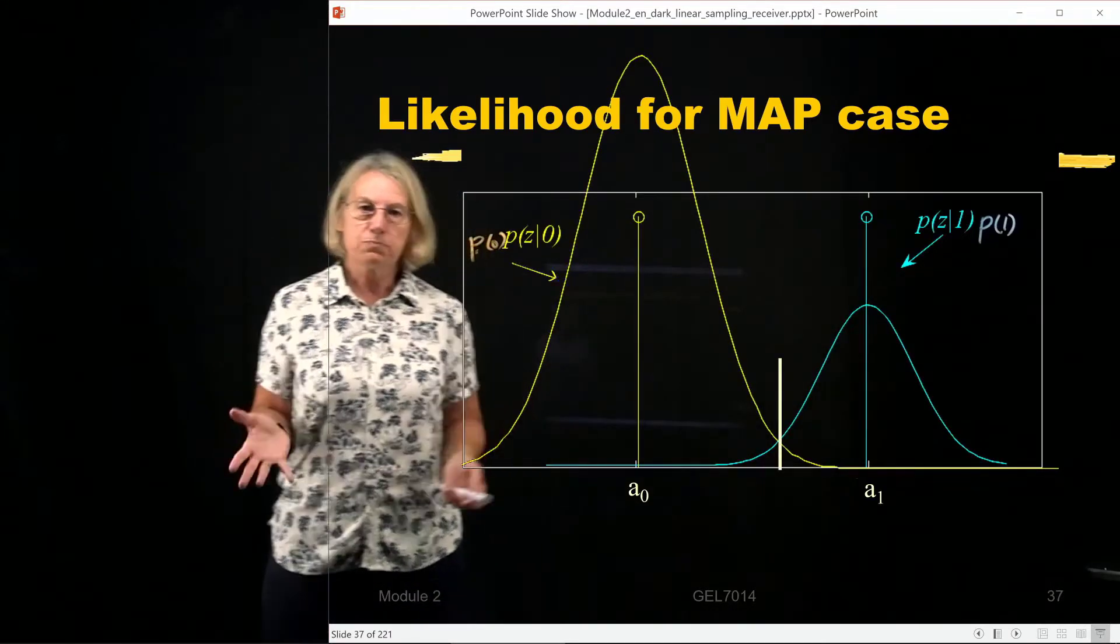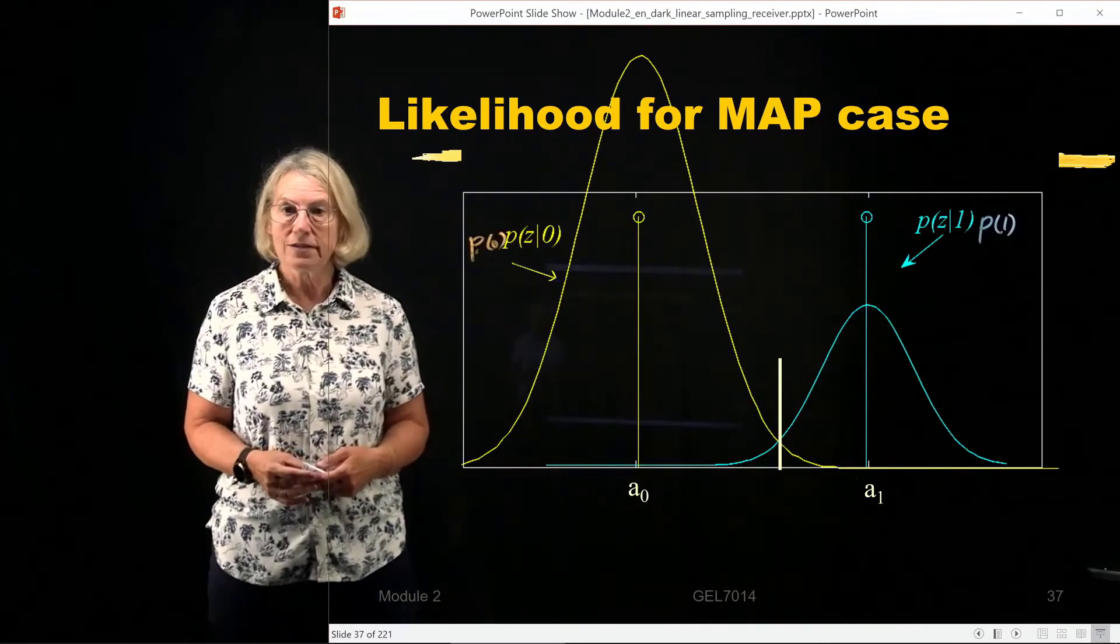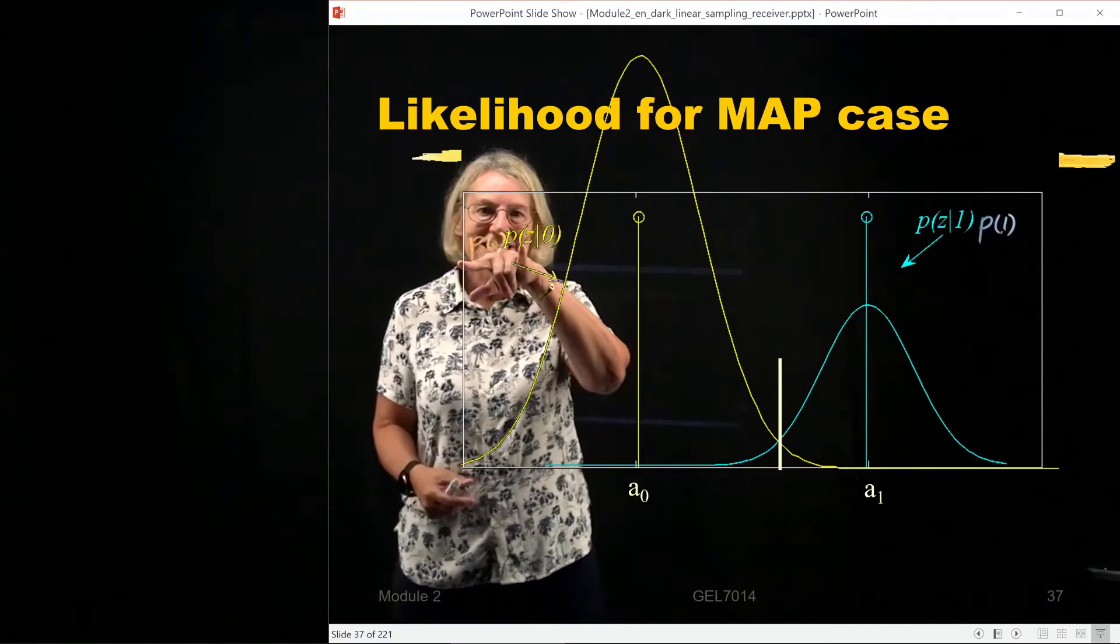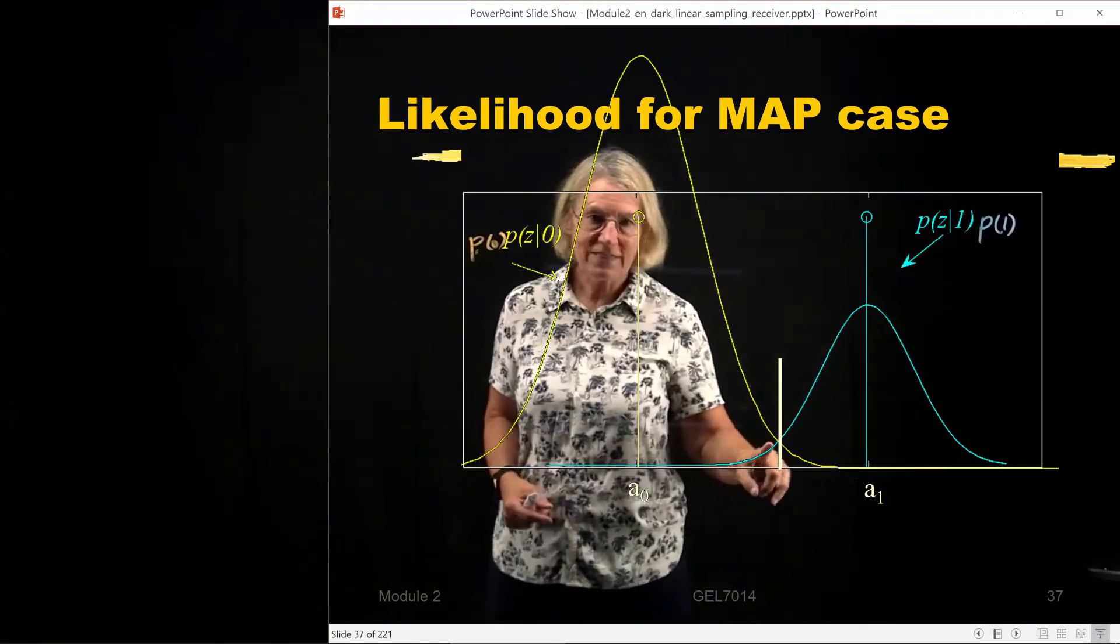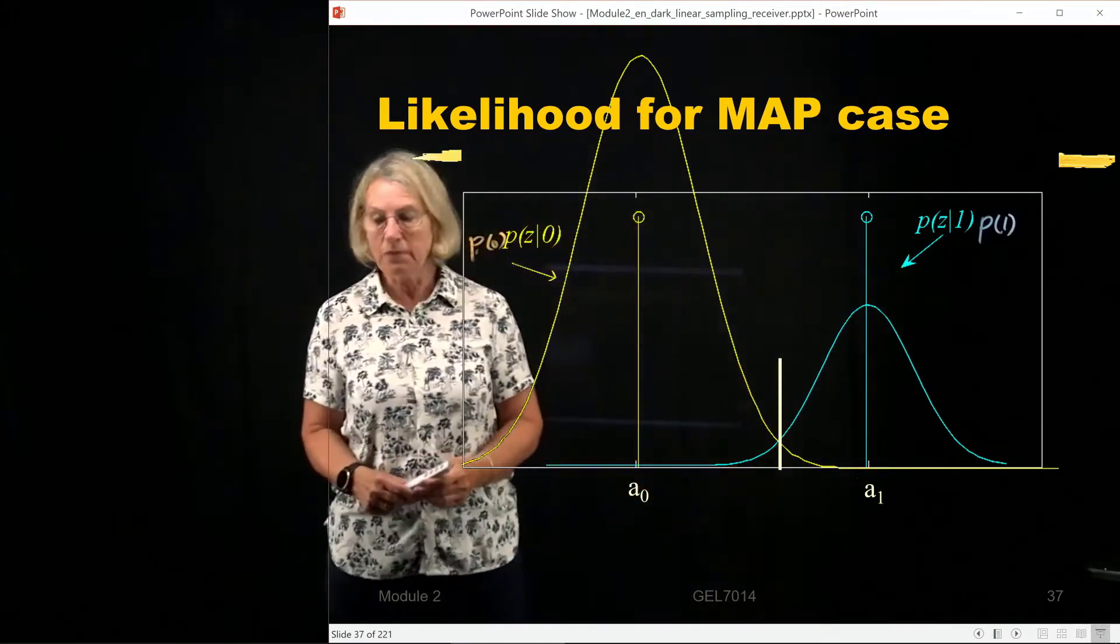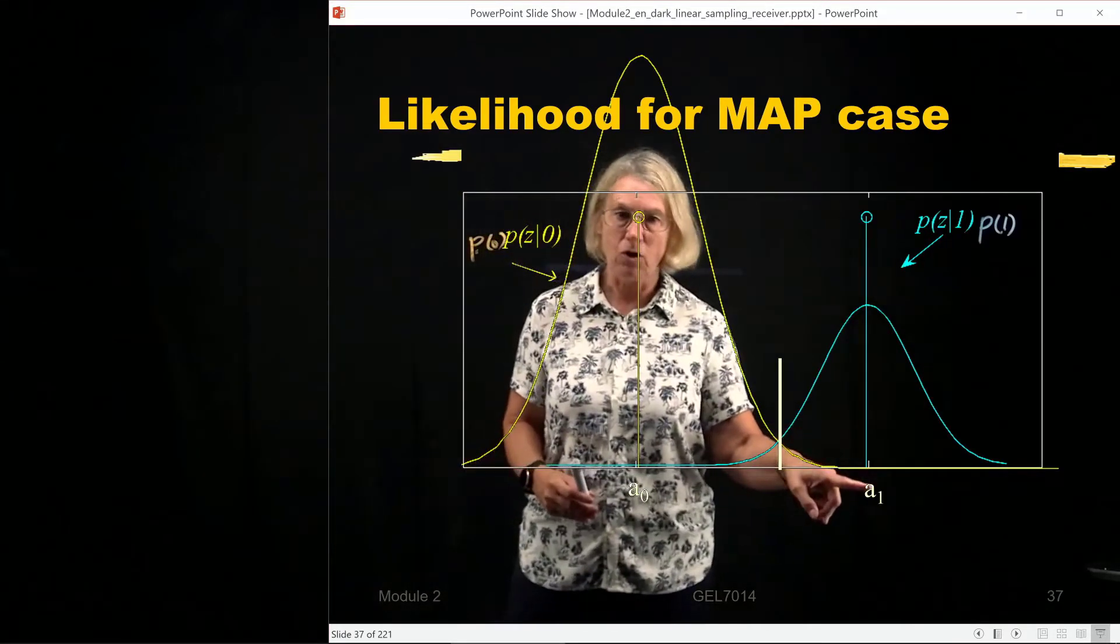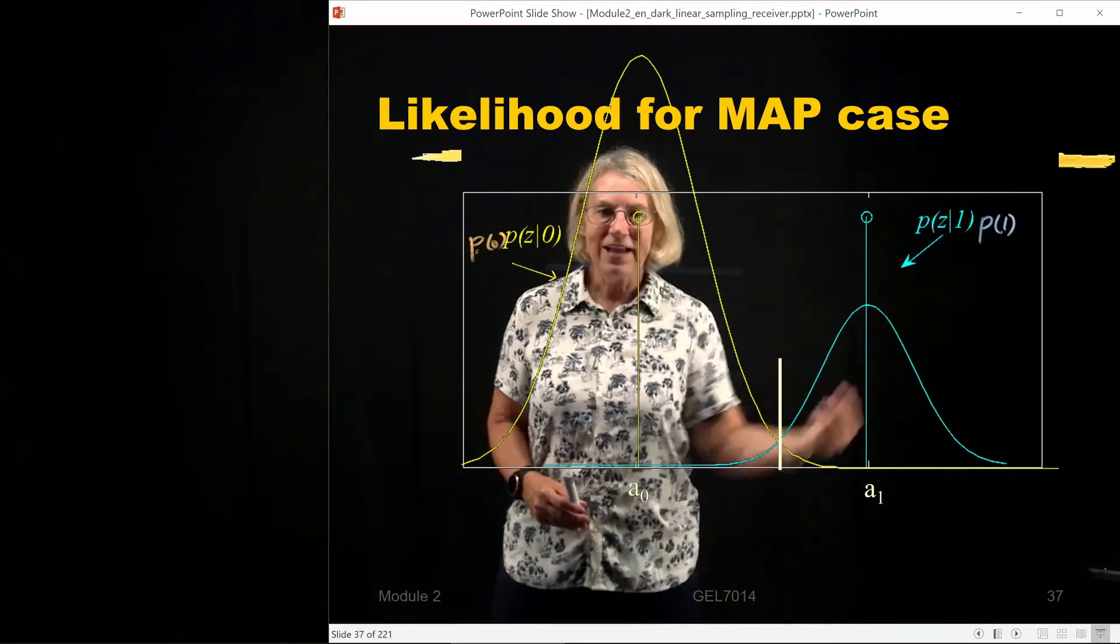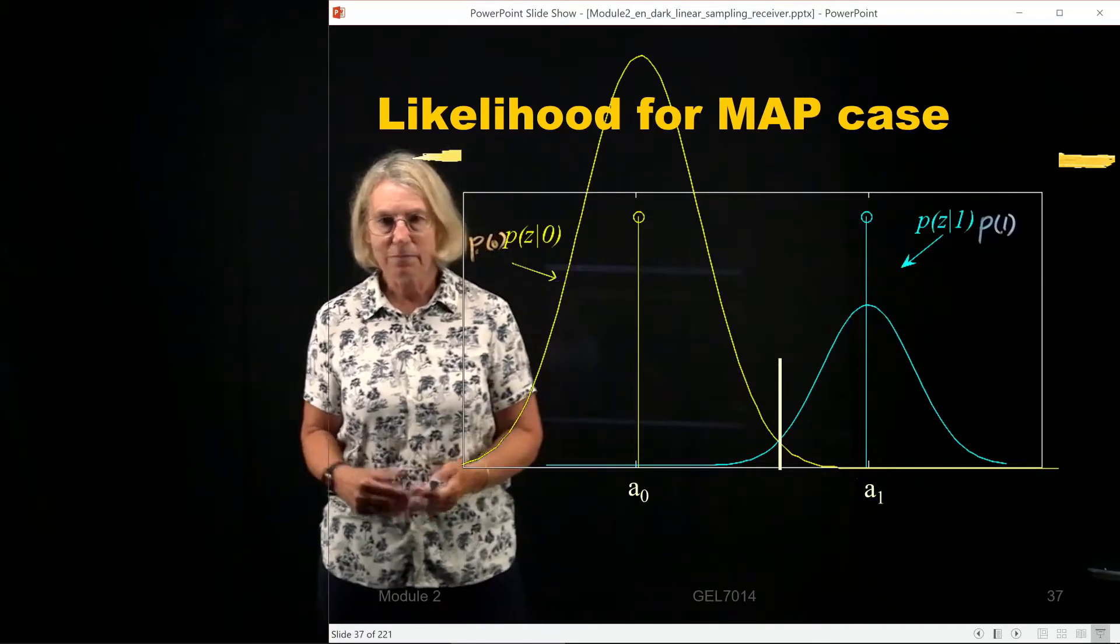So now let's put our threshold at this intersection point because the intersection point is what's really interesting. When is this equal to this? They're equal at this point. And so now if I make that intersection point to be my threshold, in that case I'm going to say if it's bigger than the threshold, that means that this product is bigger. If it's smaller than the threshold, that means that this product is bigger.